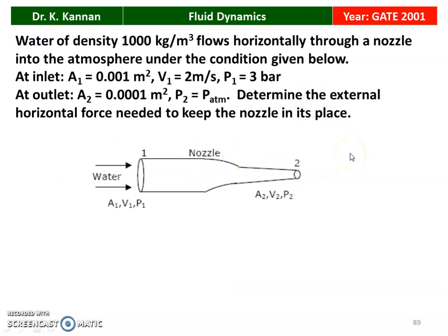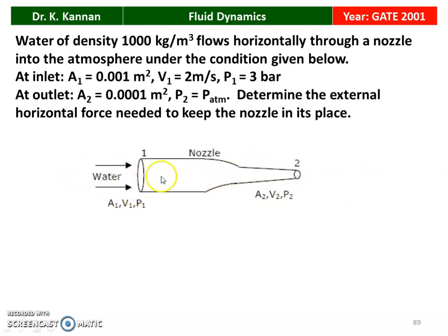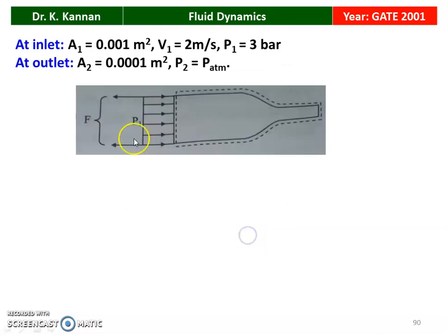Next question from the GATE 2001 question paper. Water of density 1000 kg/m³ flows horizontally through a nozzle into the atmosphere. At inlet: A1 = 0.001 m², V1 = 2 m/s, P1 = 3 bar. At outlet: A2 = 0.0001 m², P2 = atmospheric pressure. Determine the external horizontal force needed to keep the nozzle in place. As water leaves the nozzle, a jet forms and the nozzle tends to move backward; we need the force to hold it.